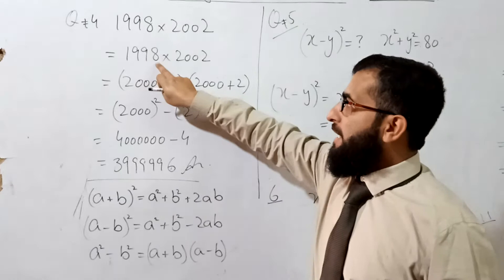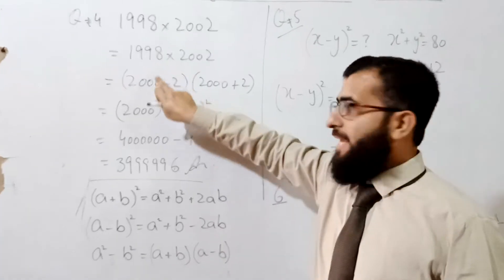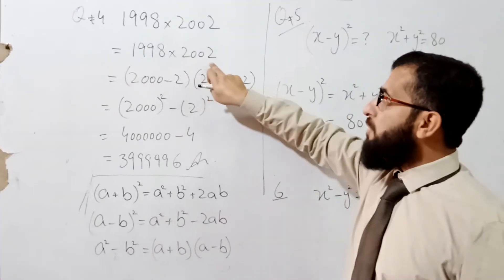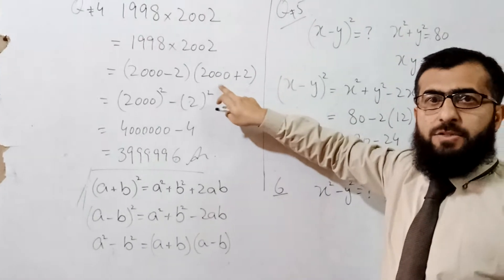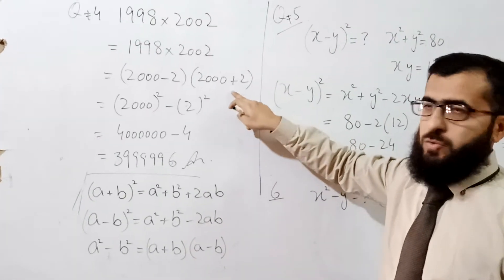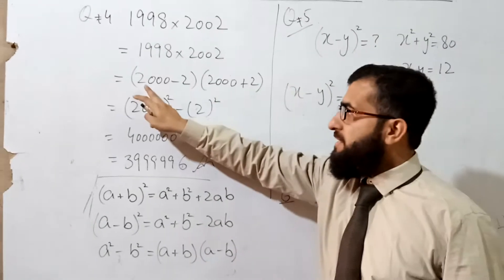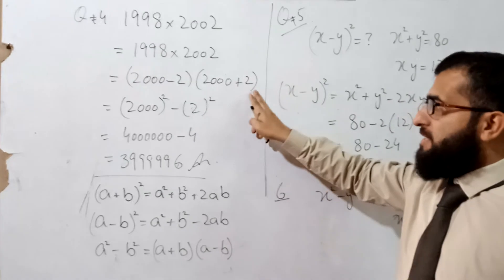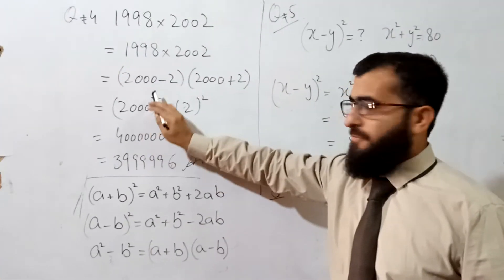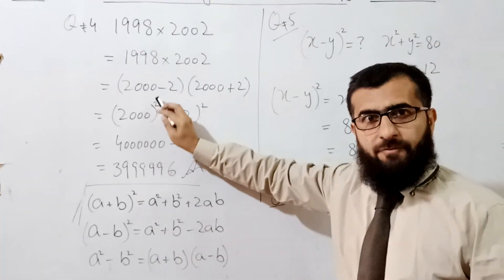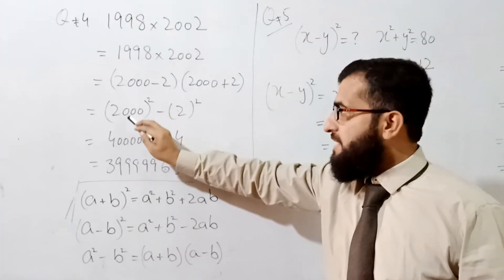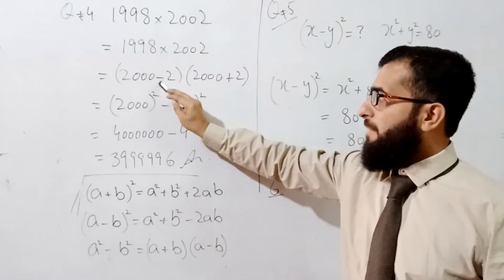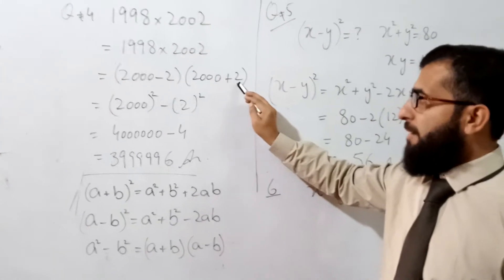1998 can be written as 2000 − 2, and 2002 can be written as 2000 + 2. This gives us the form (a − b)(a + b), and we apply the formula a² − b², which equals (a − b)(a + b).